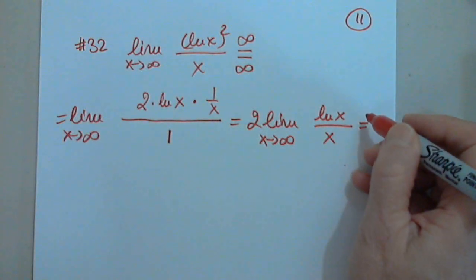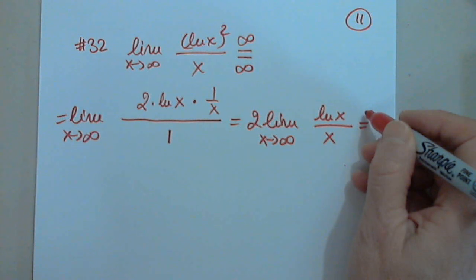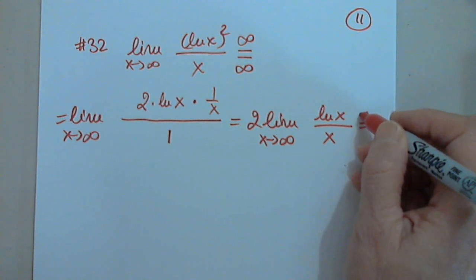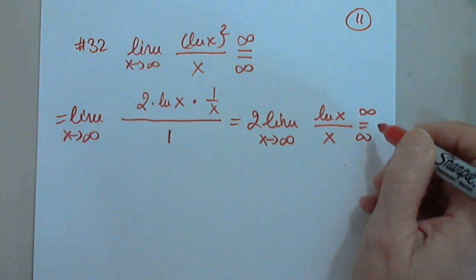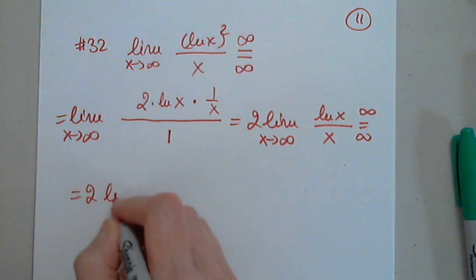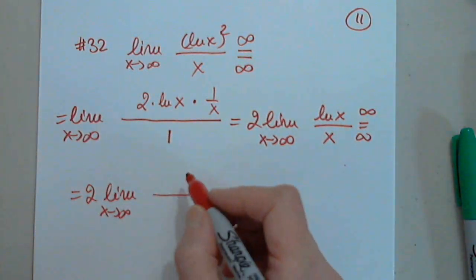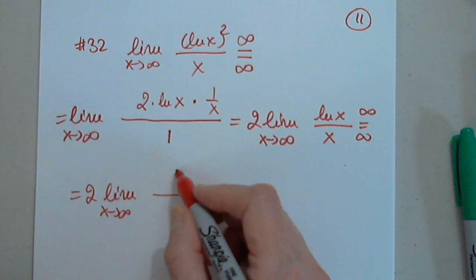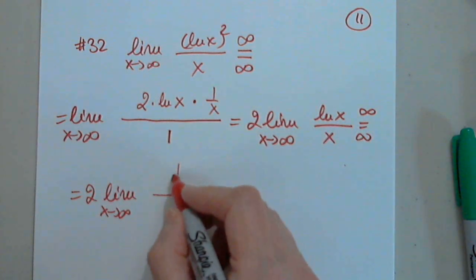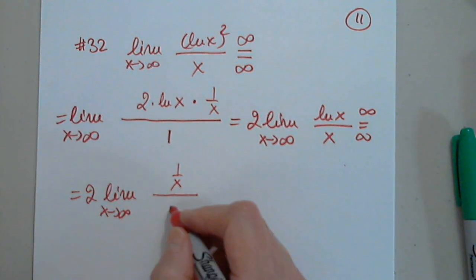Still infinity over infinity. We love it. So 2 limit as x approaches infinity. The derivative of the top, 1 over x. The derivative of the denominator, 1.